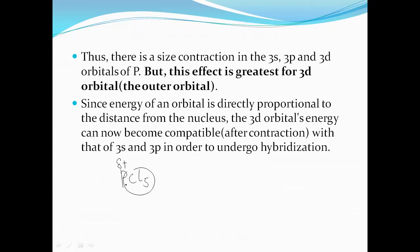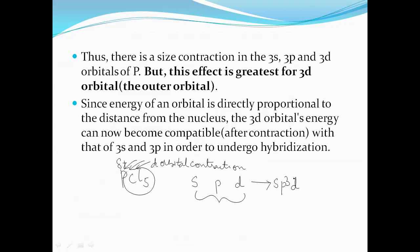Because of the highly electronegative chlorine atoms around phosphorus, phosphorus acquires a partial positive charge, attracting its outermost electrons inward. This causes d-orbital contraction, reducing the size and energy of the d orbitals so that s, p, and d orbitals now have almost the same energy and can participate in hybridization, forming sp3d hybrid orbitals in PCl5.